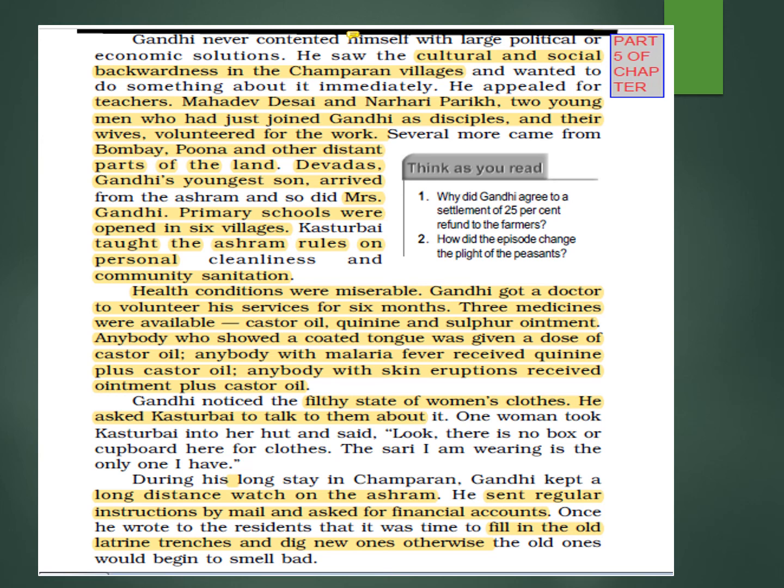Three general medicines were available: castor oil, quinine, and sulfur ointment. Anyone who showed a coated tongue was given castor oil; anyone with malaria fever received quinine plus castor oil; anyone with skin eruptions received ointment plus castor oil. Gandhi also noticed the filthy state of women's clothes and asked Kasturba to talk to them. One woman said: 'The saree I am wearing is the only one I have — there is no box or cupboard here for clothes.'